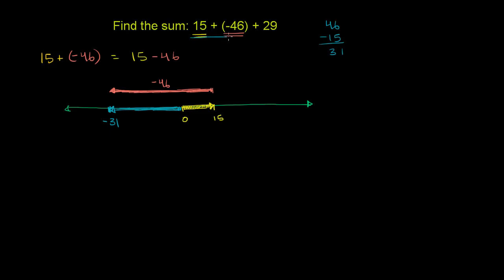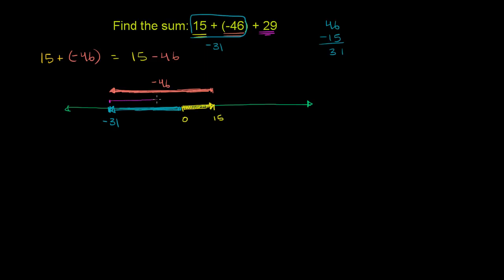So we know that this first part over here is negative 31. And then to that we are going to add 29. That means that we're going to start at negative 31 and we're going to move 29 to the right — we're adding 29, so we're going to move 29 to the right. So then we're going to move 29 over to the right. That's the 29 part — a positive 29.